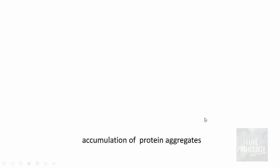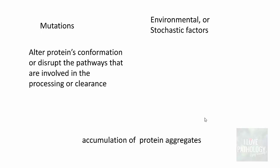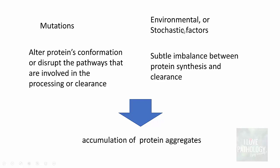The accumulation of protein aggregates is basically due to mutations or environmental and stochastic factors. Mutations can either alter the protein's conformation or structure, or disrupt the pathways involved in processing or clearance of these proteins. With environmental factors, there can be a subtle imbalance between the synthesis and clearance of proteins, which leads to accumulation of protein aggregates.